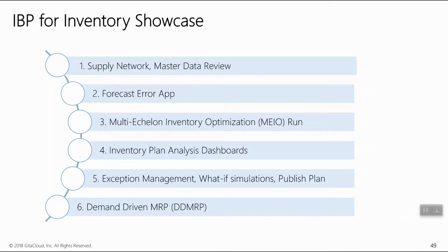Next we will go into a multi-echelon inventory optimization run, show you how the operator takes all the input variabilities into account to generate recommended safety stock, and then we will go into inventory plan analysis and dashboards to understand the safety stock drivers, all the inventory components other than safety stock — things like pipeline or cycle stock. We will also show what kind of alerts can be generated, run a set of what-if simulations, walk you through the process of writing the inventory plan, and getting it approved by management so you understand how planners retain control both on the input and output sides of this engine.